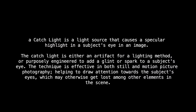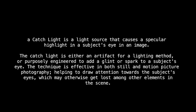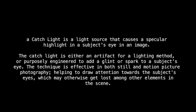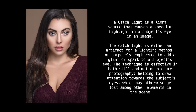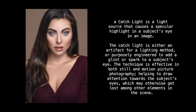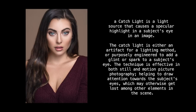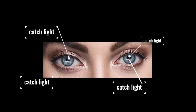According to Wikipedia, and I'm paraphrasing here, a catch light is a light source that causes a specular highlight in the subject's eye in an image. The catch light is either an artifact of a lighting method or purposely engineered to add a glint or spark to a subject's eye. The technique is effective in both still and motion picture photography, helping to draw attention towards the subject's eyes which may otherwise get lost among other elements in the scene.